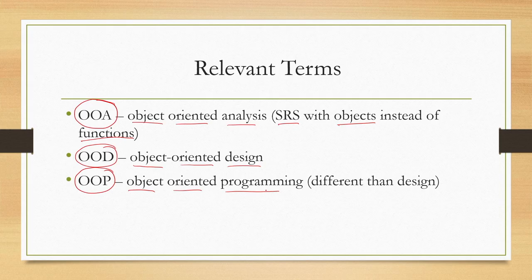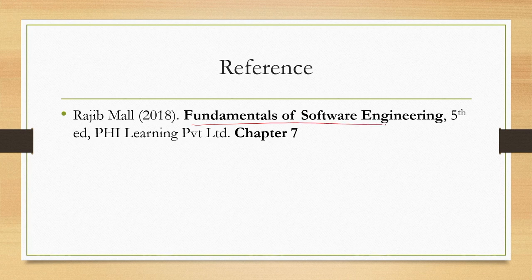In today's lecture, we have learned the basic concepts of object oriented design: the idea of objects and classes. In subsequent lectures, we will learn in more detail how to use these concepts for system design. The concepts discussed today can be found in the book Fundamentals of Software Engineering, fifth edition, Chapter 7. That is all for this lecture — we will continue in subsequent lectures. Thank you and goodbye.